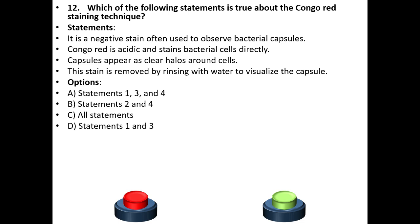Twelfth question. Which of the following statements is true about the Congo red staining technique? Statements: It is a negative stain often used to observe bacterial capsules. Congo red is acidic and stains bacterial cells directly. Capsules appear as clear halos around cells. This stain is removed by rinsing with water to visualize the capsule.